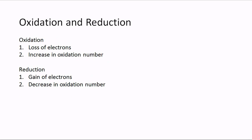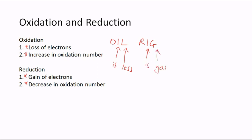Another topic closely associated with electrolysis is oxidation and reduction. Oxidation is the loss of electrons and also an increase in oxidation number; reduction is the gain of electrons or a decrease in oxidation number. You may have come across the acronym OIL RIG: Oxidation Is Loss, Reduction Is Gain — of electrons.